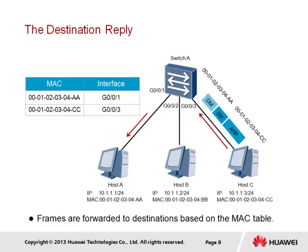The frame is forwarded by host C and received by switch A on interface Gigabit Ethernet 0-0-3. As with frames received from host A, the switch will record both the source MAC address of the frame received and the interface on which the frame arrived, and populate the MAC address table with this new information. Following this, the switch must determine the forwarding interface by identifying the destination MAC address entry in the MAC address table and the associated interface, which in the case of frames destined for host A is interface Gigabit Ethernet 0-0-1. The frame is then forwarded directly to host A over Gigabit Ethernet 0-0-1 in unicast fashion without any interruption to host B.